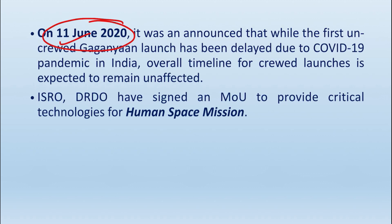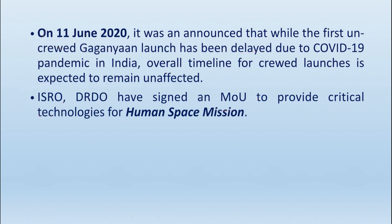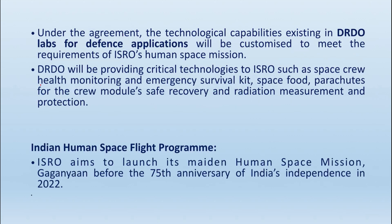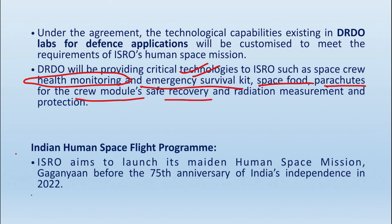On 11 June 2020, it was announced that there will be some delay, but the overall timeline will remain the same. DRDO and ISRO signed a Memorandum of Understanding for this human space mission to provide critical technologies, including health monitoring, the astronauts' emergency survival kit, space food, parachutes, crew modules, and safe recovery — all of which are the responsibility of DRDO.